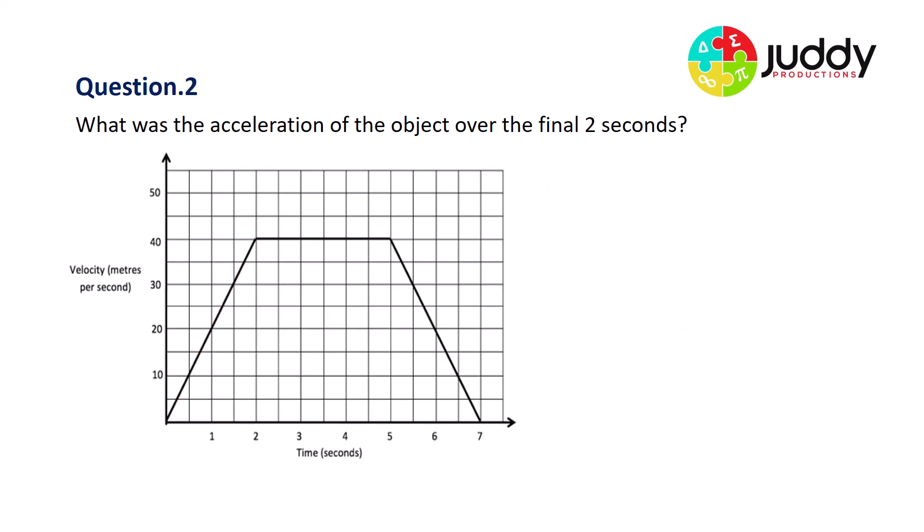Question number two. What was the acceleration of the object over the final two seconds? So we represent the graphing of the final two sections with a red line. Again, acceleration is equal to gradient, which we just saw was equal to rise over run. The rise starts at a velocity of 40 and ends at a velocity of zero. So this is actually a negative gradient, so it's not really so much a rise but a fall. We can record that as a rise of negative 40 meters per second because it's decreased or dropped by 40 meters per second. The run, once again, is two seconds.